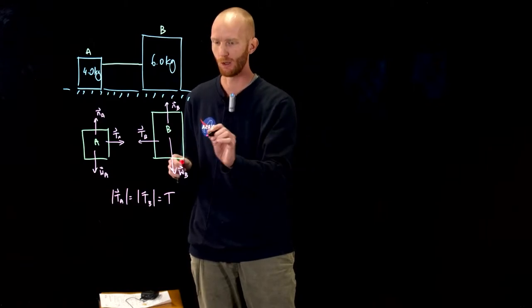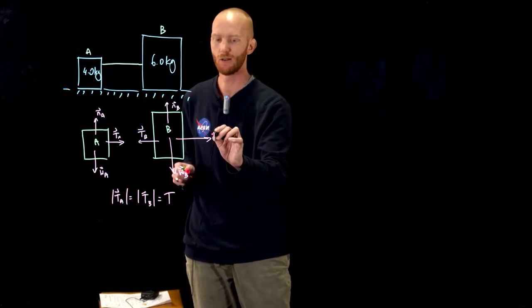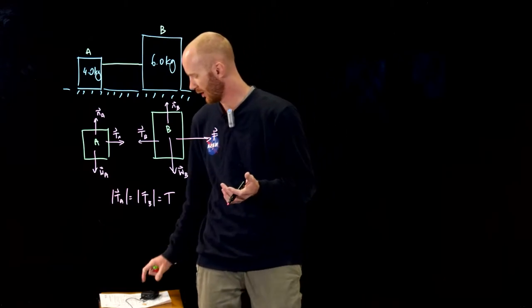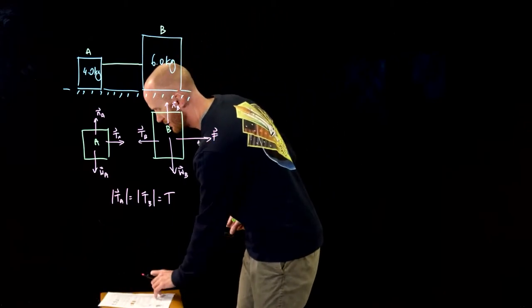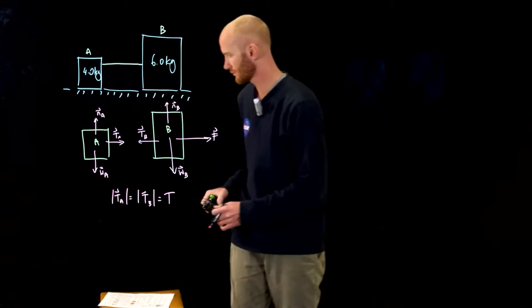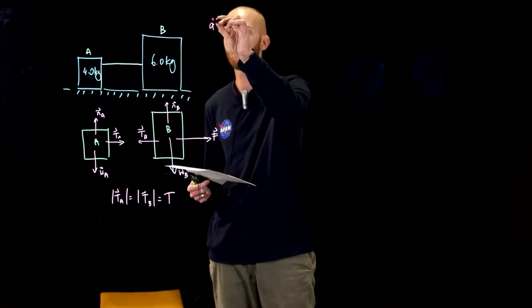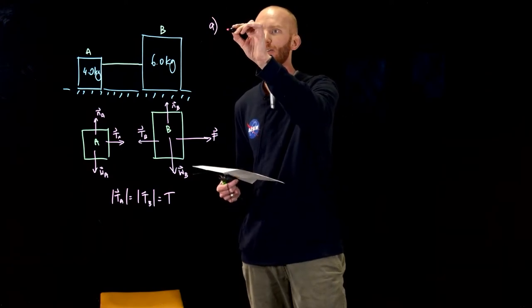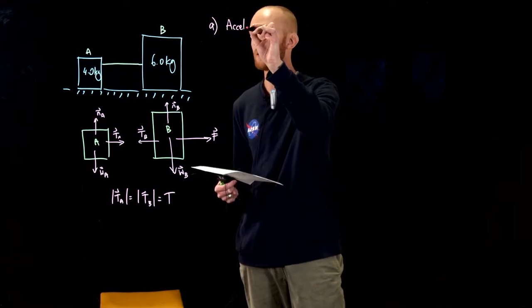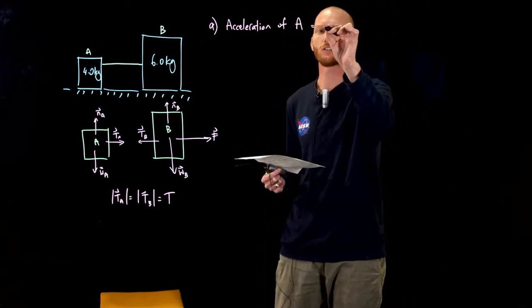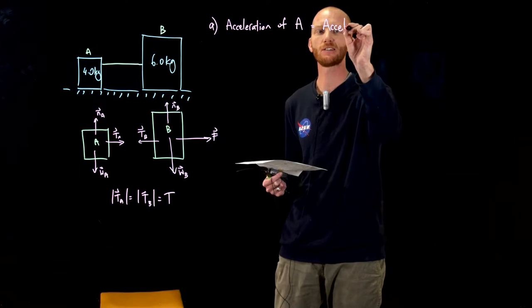And there's one more force in the problem which is the force which the person is pulling on object B with. Now the question in part A asks us to find the acceleration of crate A. The acceleration of crate A is equal to the acceleration of crate B. That's the first key insight.